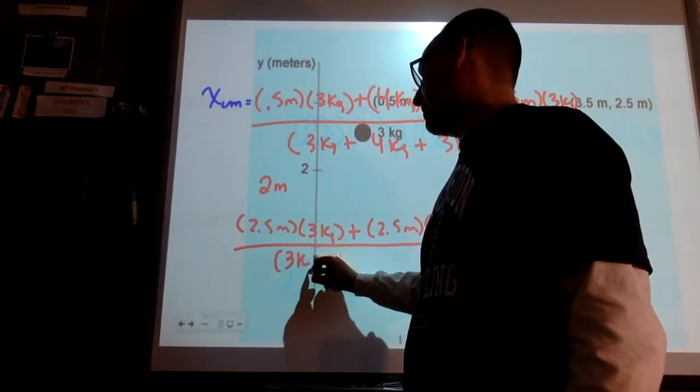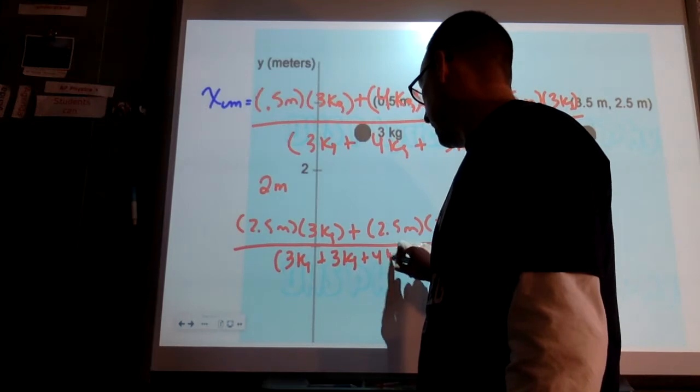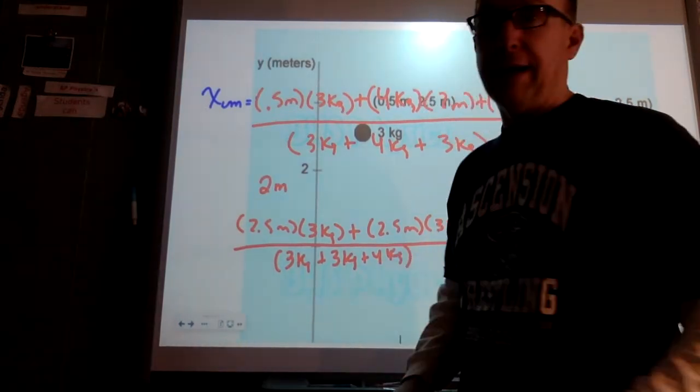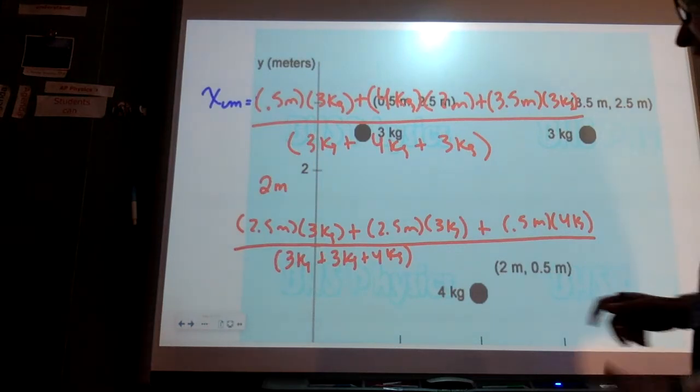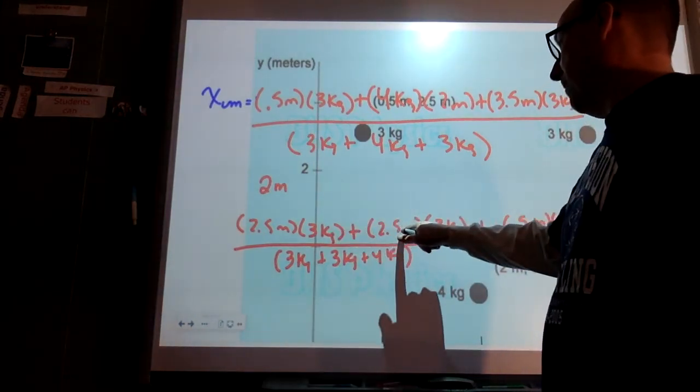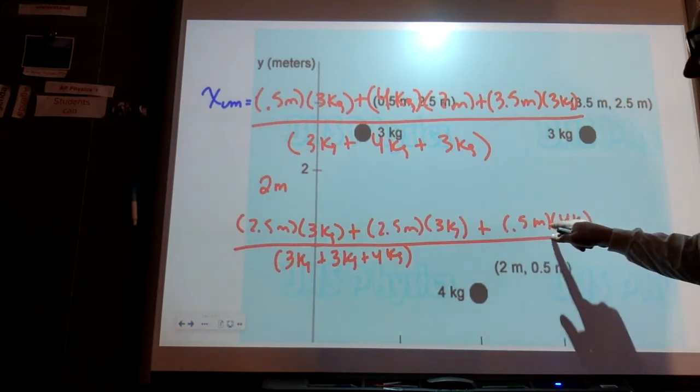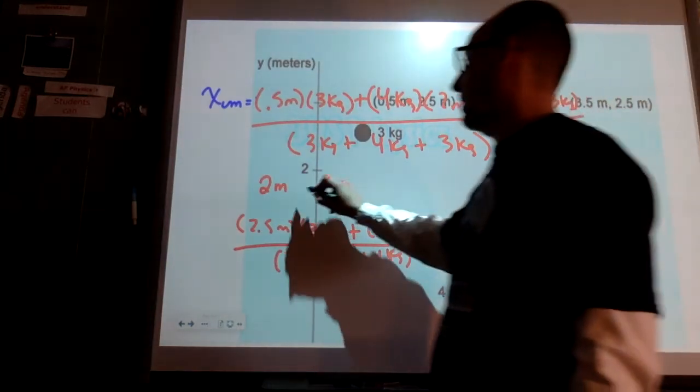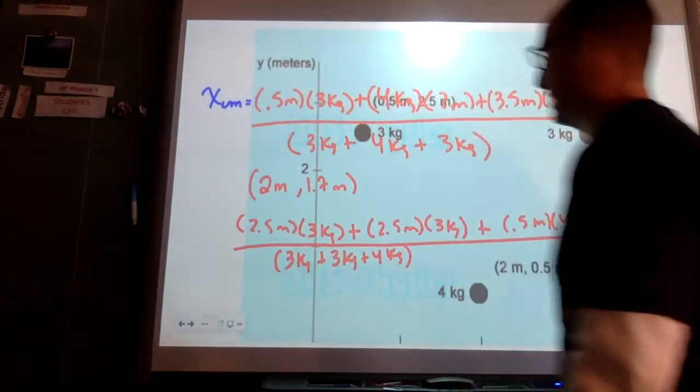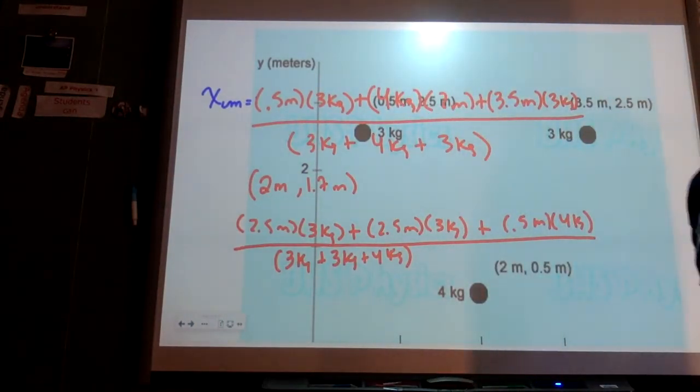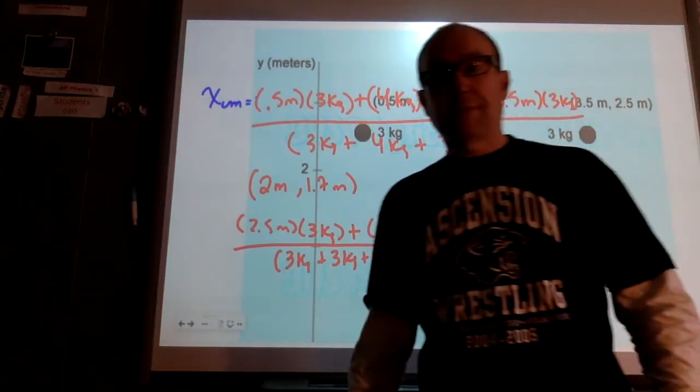And then this would be over the total mass. So the X center of mass is going to be 1.5 plus 8 is 9.5 plus 11.5 is 20 divided by 10 or 2. So our X center of mass is located at 2 meters. For the Y one, we'll do the same thing. So our first one is 2.5 meters and 3 kilograms. Our second one is 2.5 meters and 3 kilograms. And our last one is 0.5 meters and 4 kilograms. So we have 2.5 times 3 plus 2.5 times 3 is 15. 15 plus 2 is 17. Divided by 10 would be 1.7. So our center of mass for this system would be located at 2, 1.7.